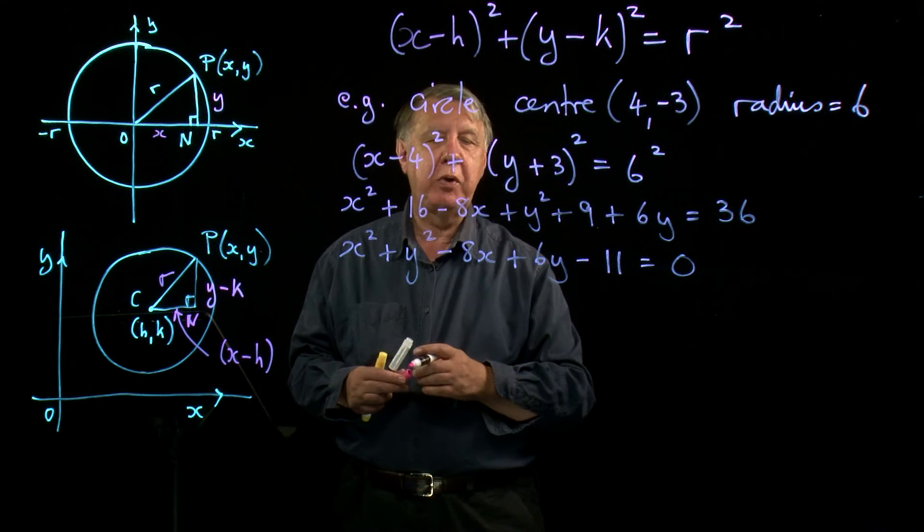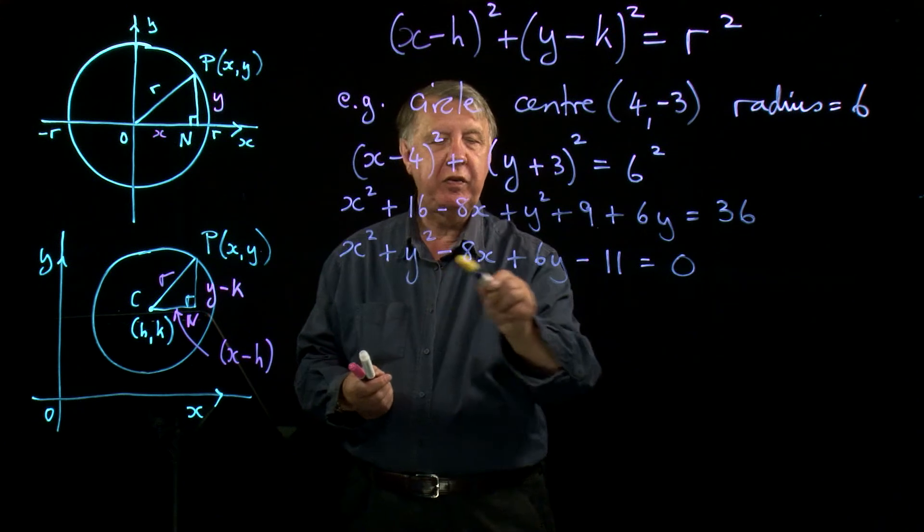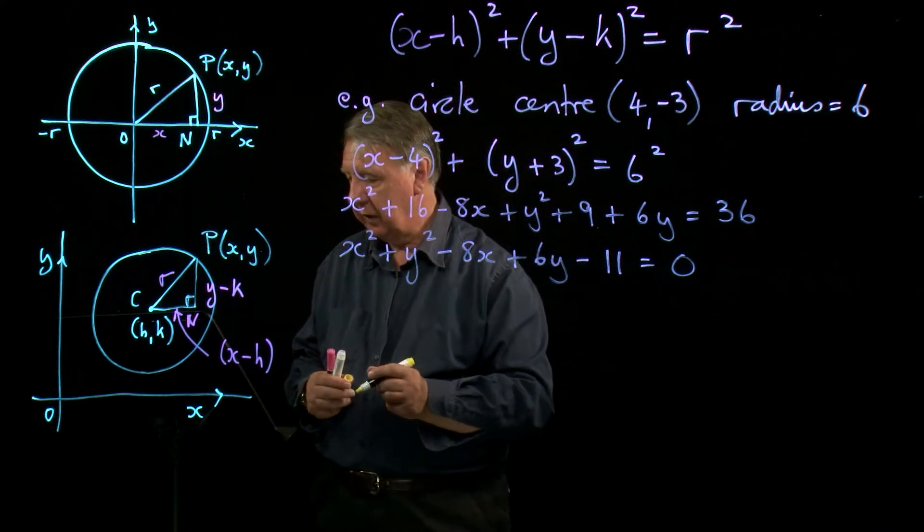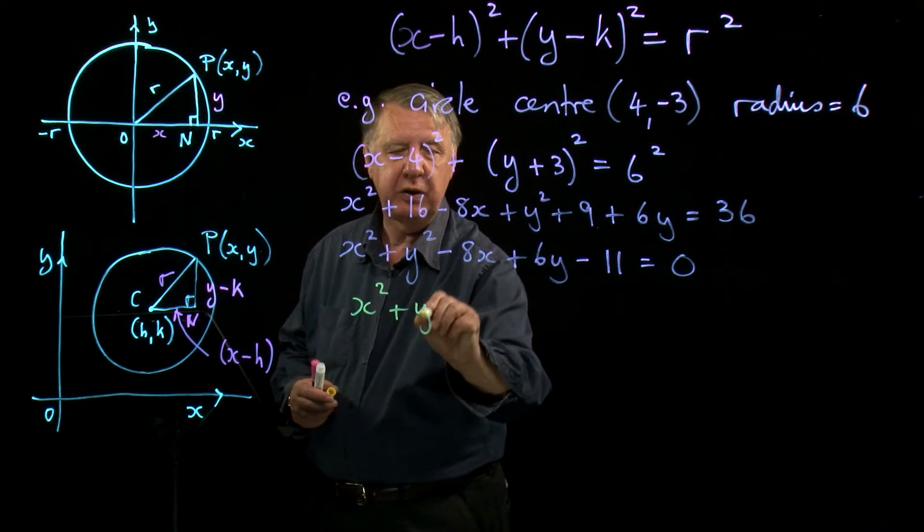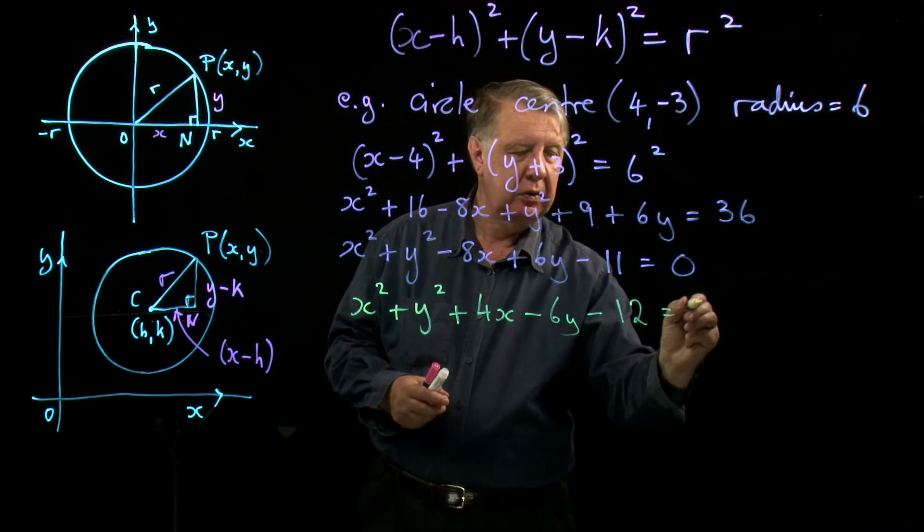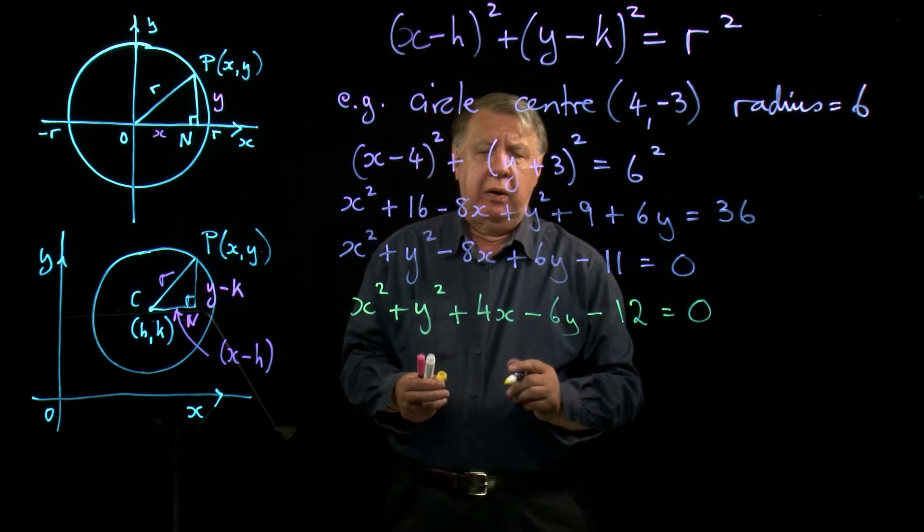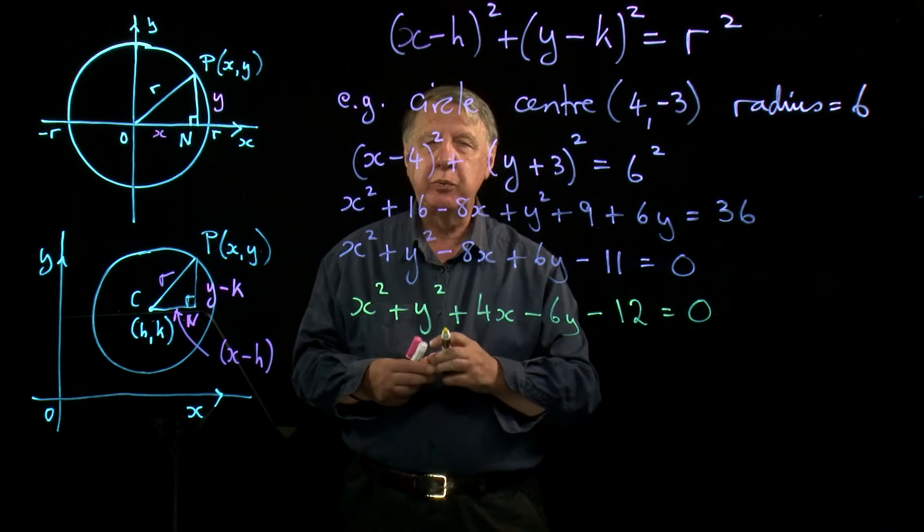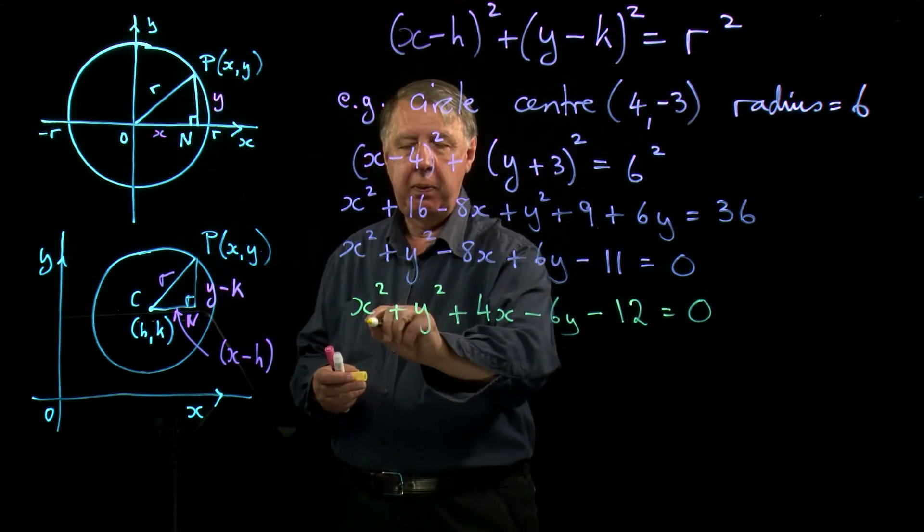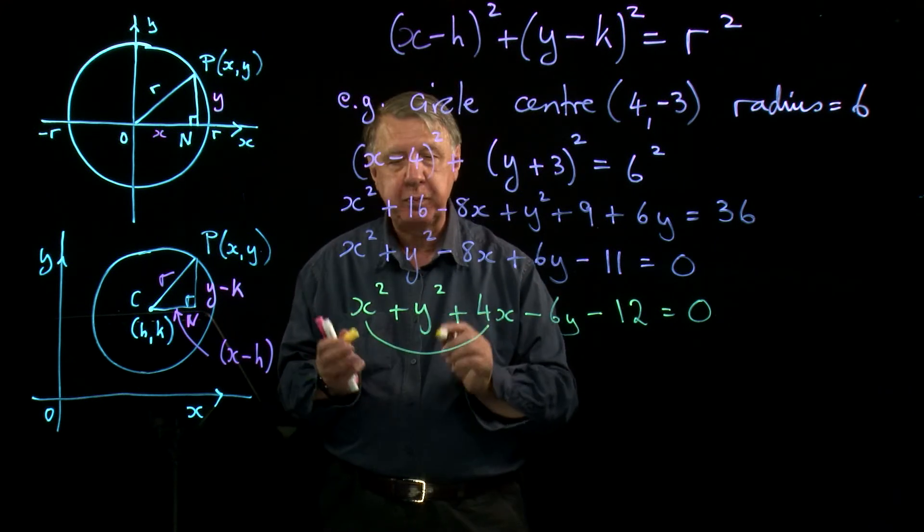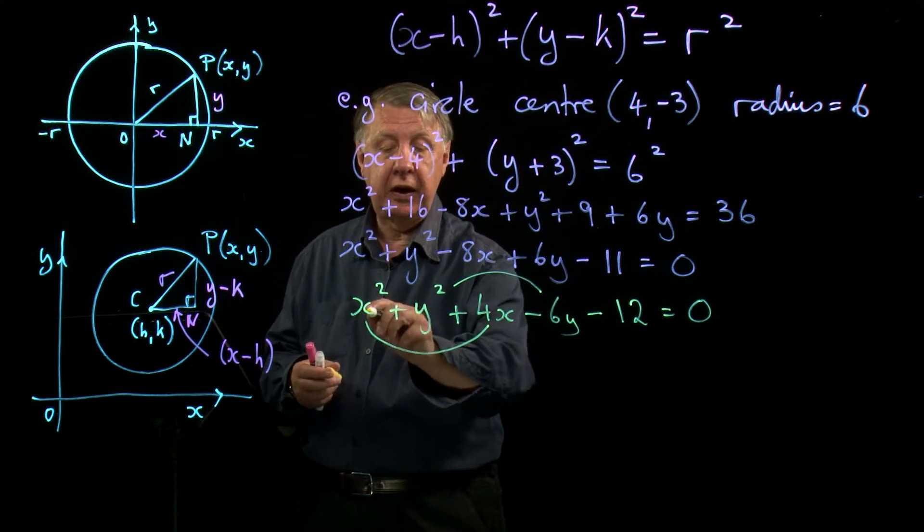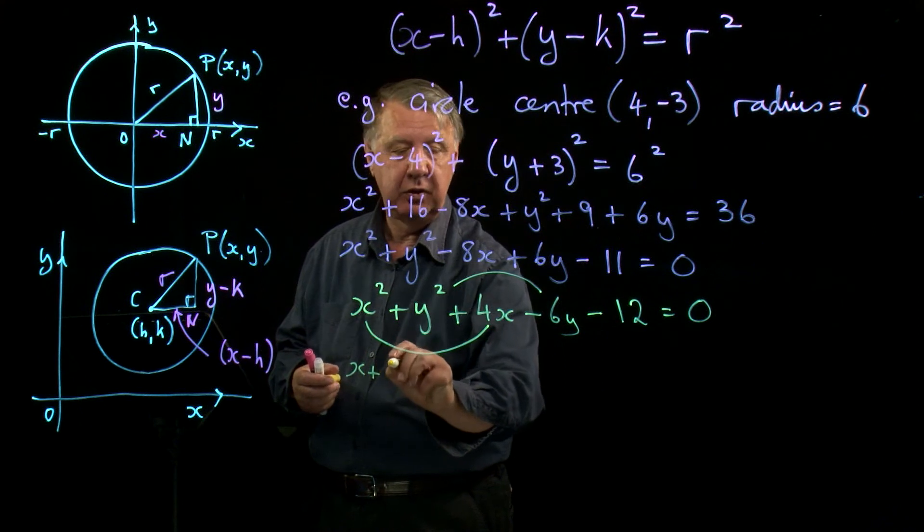Now sometimes you might be asked to do this in reverse. So they may give you the equation like this and ask you for the center and the radius of the circle. So let's go for an example. Let's have X squared plus Y squared plus 4X minus 6Y minus 12 equals 0. There are tricks for doing this which I'll show you at the end, but we should understand what we're trying to do. Now the crucial thing is to visualize the X part and the Y part separately. And we do a sort of completing the square on this.